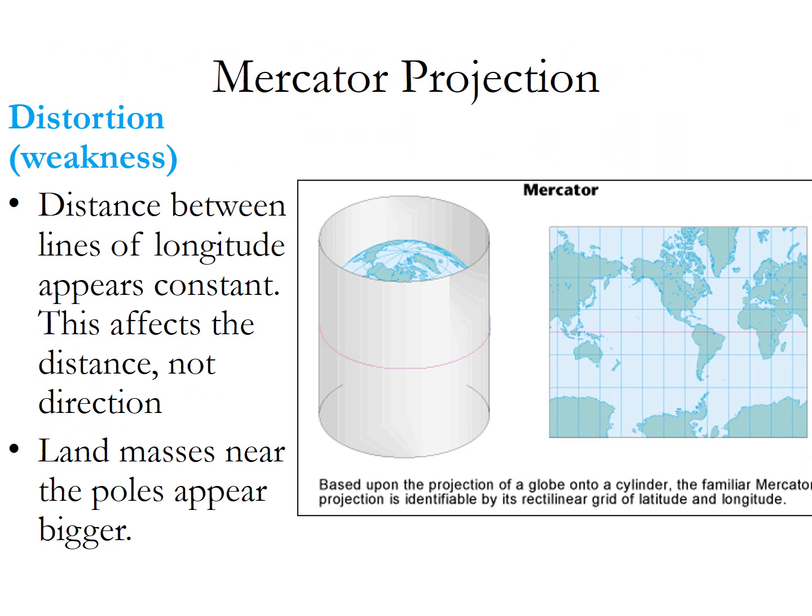Unfortunately, the distortion or the weakness with the Mercator projection is that while direction is not affected — it's good for direction — it's really bad for distance, because you don't get a clear sense of the distance in between continents. Also, the land masses near the poles look a lot bigger than they should. The example here would be Antarctica and Greenland, which are just absolutely massive on this map, and we know they're not actually that size.